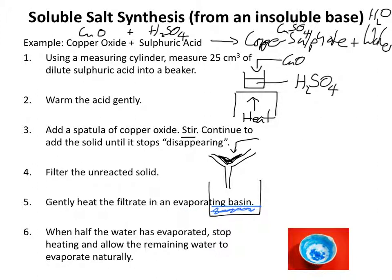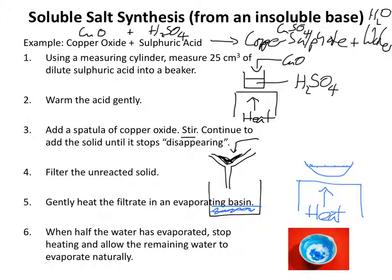An evaporating basin is a white porcelain basin — there's a picture of one in the bottom right corner. You put the basin on top of a tripod and gently heat the copper sulphate solution until about half the water has evaporated. What starts to happen is you get crystals forming around the edges and on the surface. When those start to form, you should stop heating and allow the rest of the water to evaporate naturally.